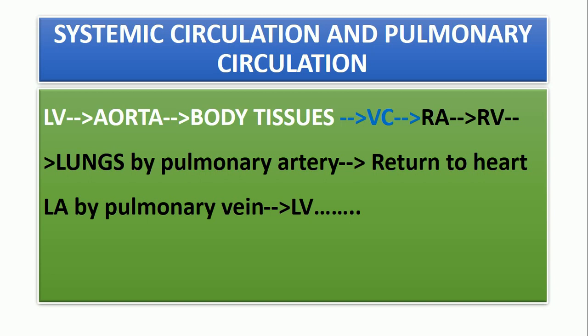Blood from the left ventricle flows and enters the aorta, then goes to the body tissues. This flow from the left ventricle to the body tissues is called systemic circulation. After the blood goes to the body tissues and is used for metabolic processes, it returns to the heart, collected through the superior vena cava or inferior vena cava, and enters the right atrium.